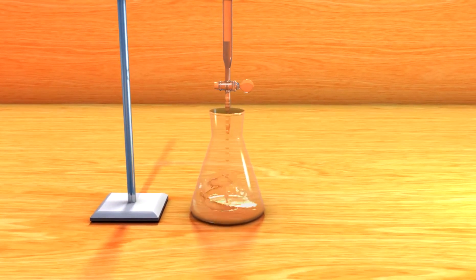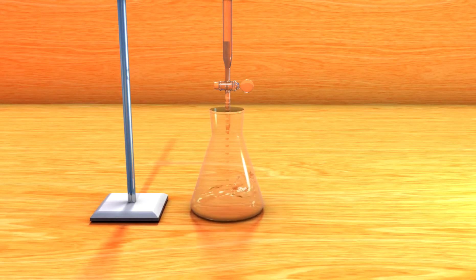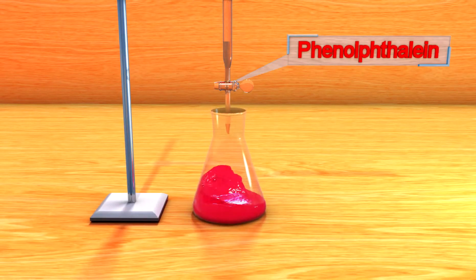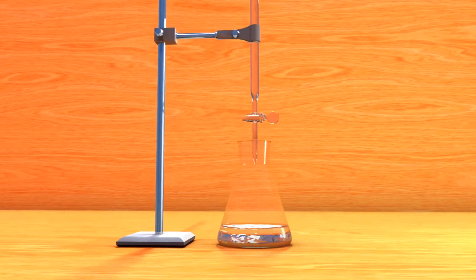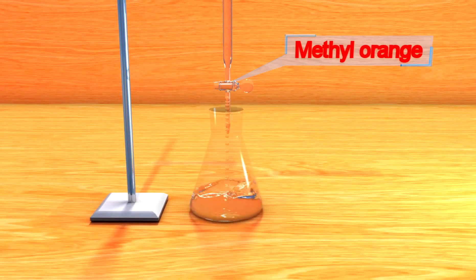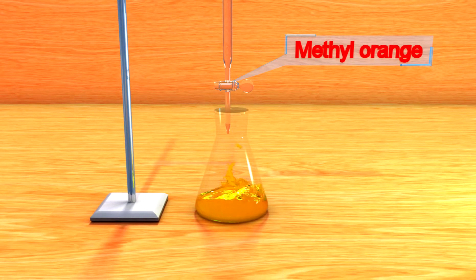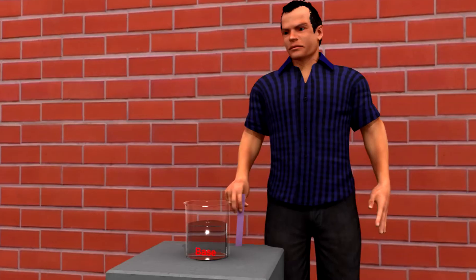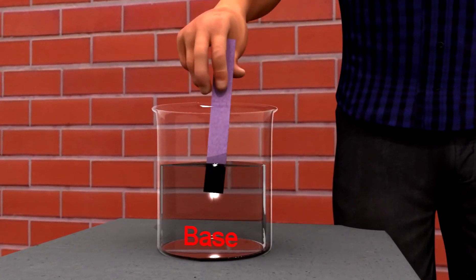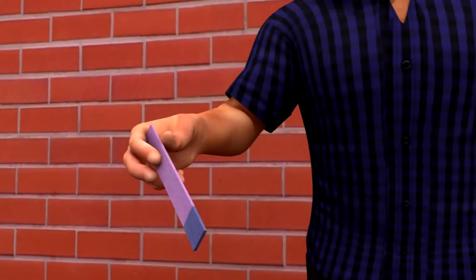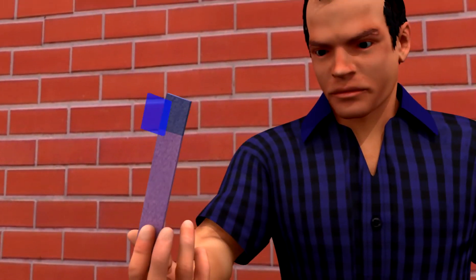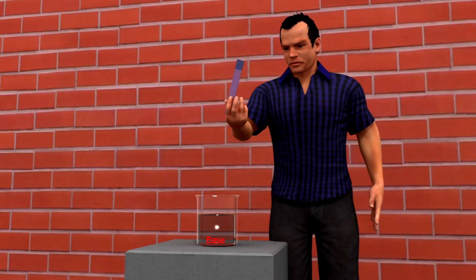It gives pink color when reacts with phenolphthalein and yellow with methyl orange. Dip a red litmus paper in base solution. What happens? It turns into blue which indicates the basic character.